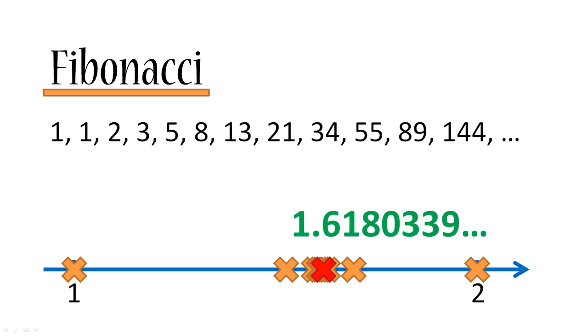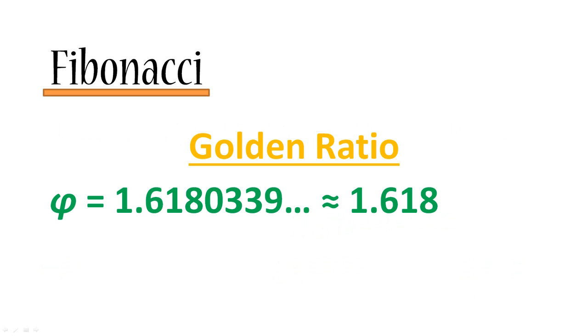And this number is known as the golden ratio, which is usually represented by the Greek letter phi. Phi is equal to approximately 1.618. All right, so by now you're saying Kirill, you're boring me with all this math, what's the purpose, what's the point?